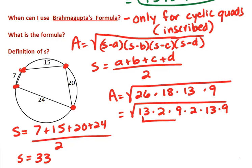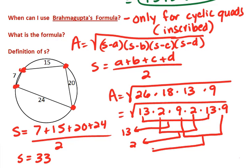So if you take a look here, these two 13s give us a 13 on the outside. The 2s send a 2 to the outside. And the 9s are a perfect square, so there's nothing left under the square root sign. This one is a perfect square.